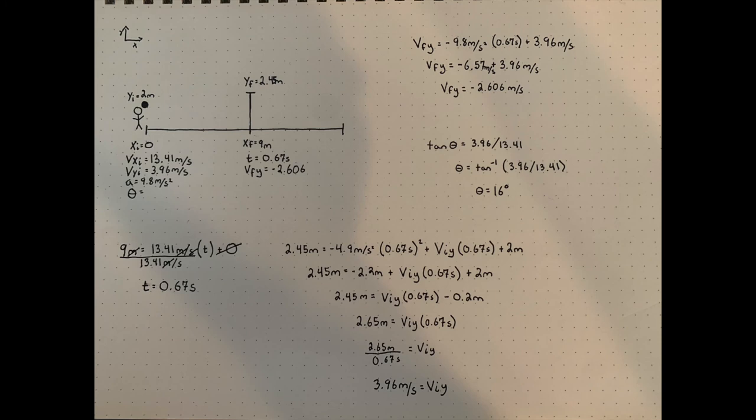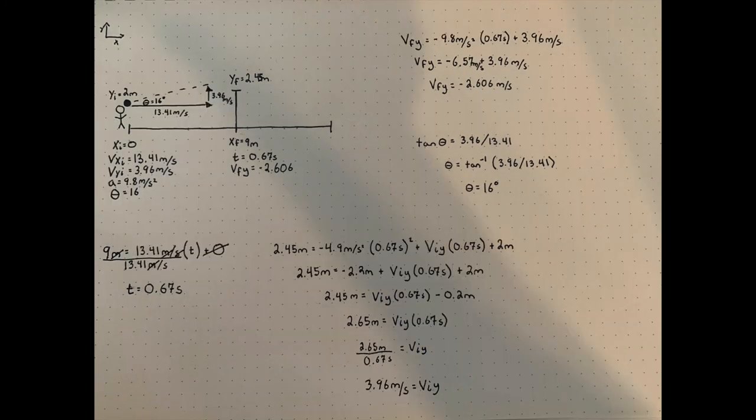So for me to make the most aggressive float serve, I should hit the volleyball at 2 meters high at an angle of 16 degrees with an x velocity of 13.41 meters per second and a y velocity of 3.96 meters per second.